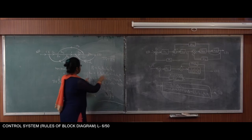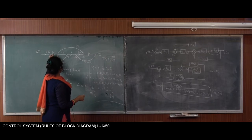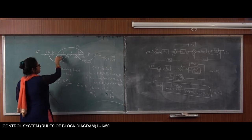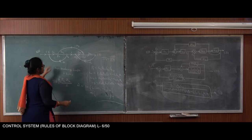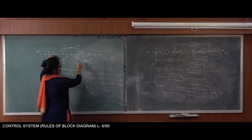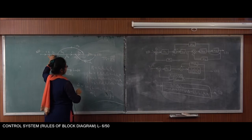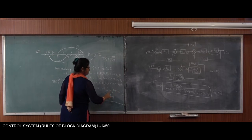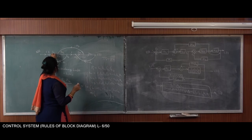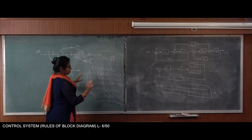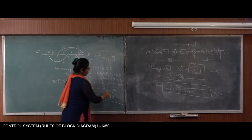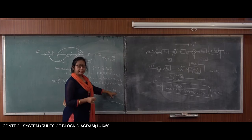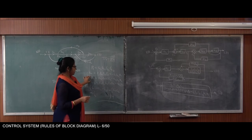Here we can see two non-touching loops. Non-touching means there should not be any common node. So we can say L1 and L2 are non-touching. The product of these two non-touching loops L1 and L2 gives us the term for that sum.